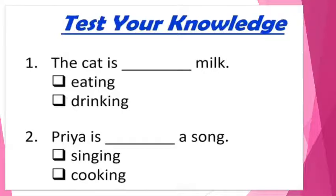So quickly, let me test your knowledge. Look at these sentences and tick whichever is the correct option. The first one: the cat is dash the milk, and the options are eating and drinking. Here we will say that the cat is drinking milk, so tick the option 'drinking.' Now the second one: Priya is dash a song.